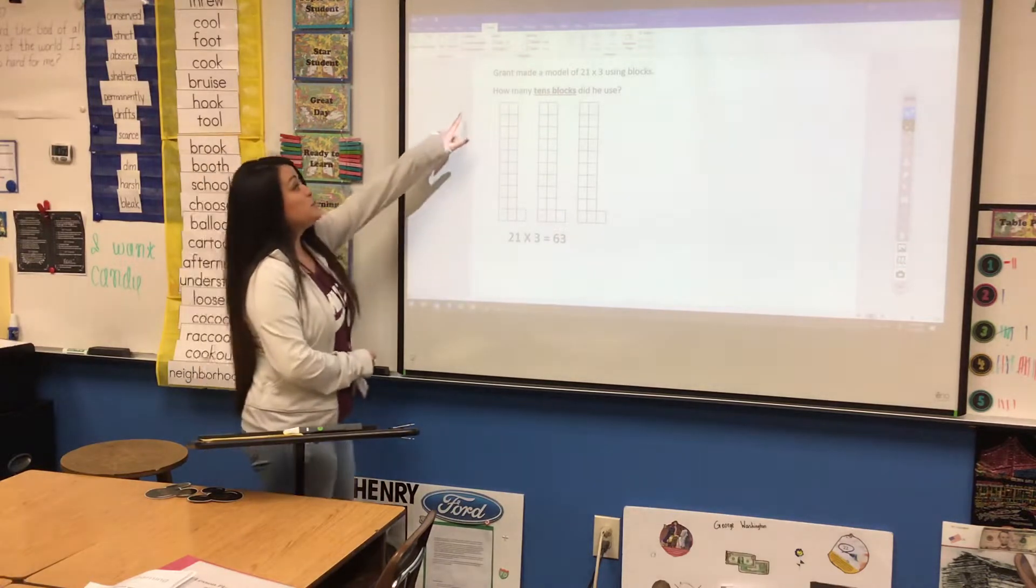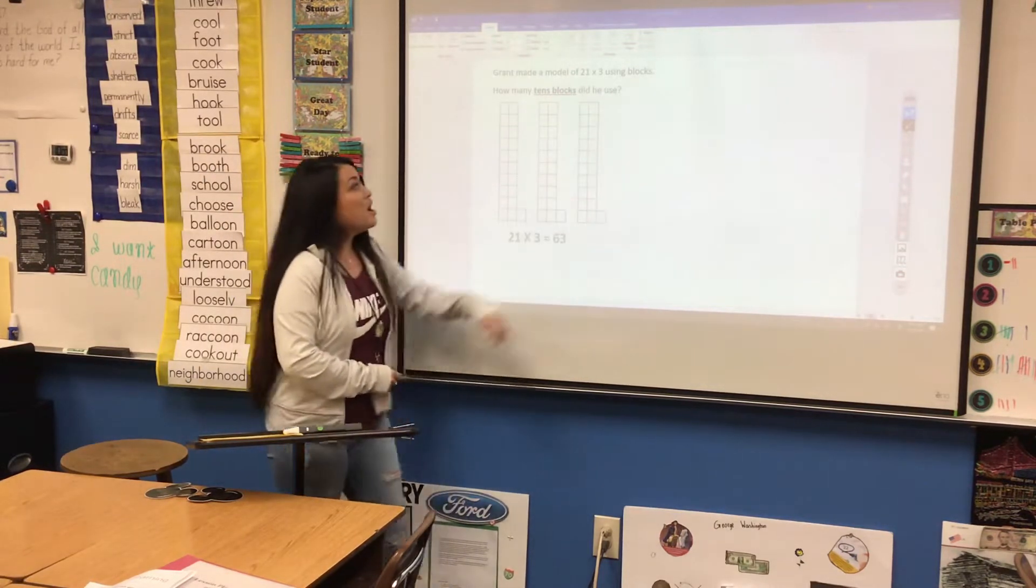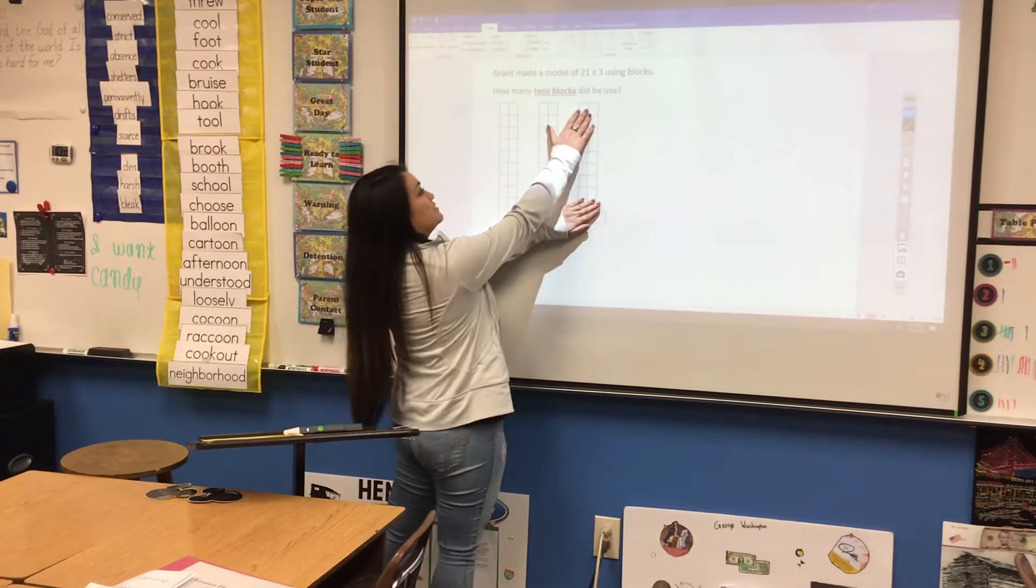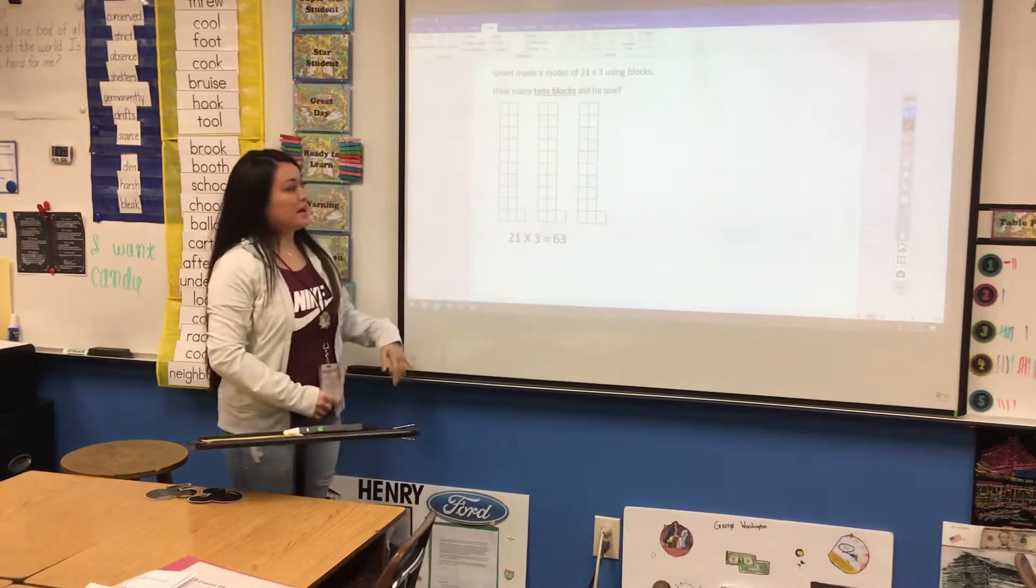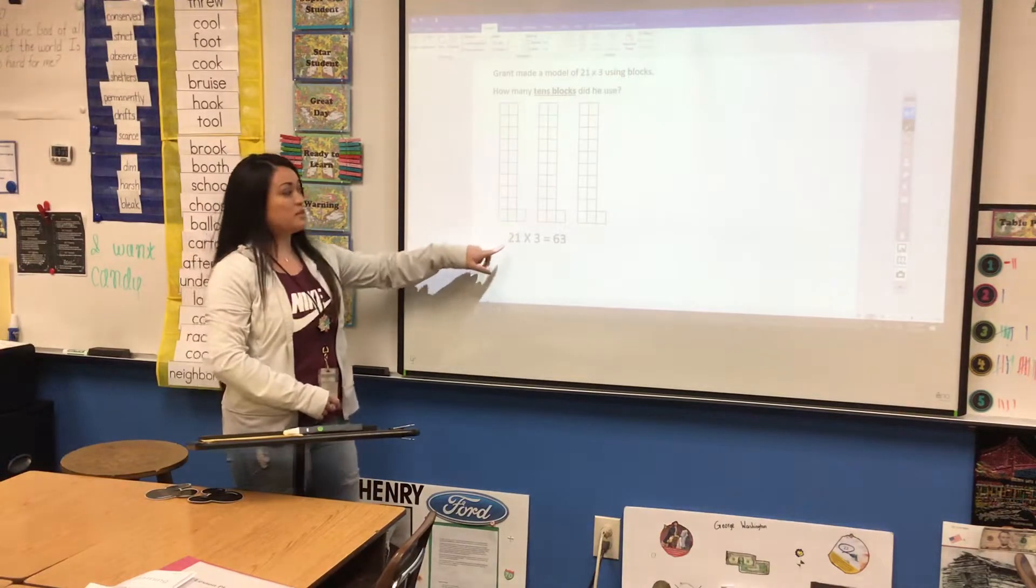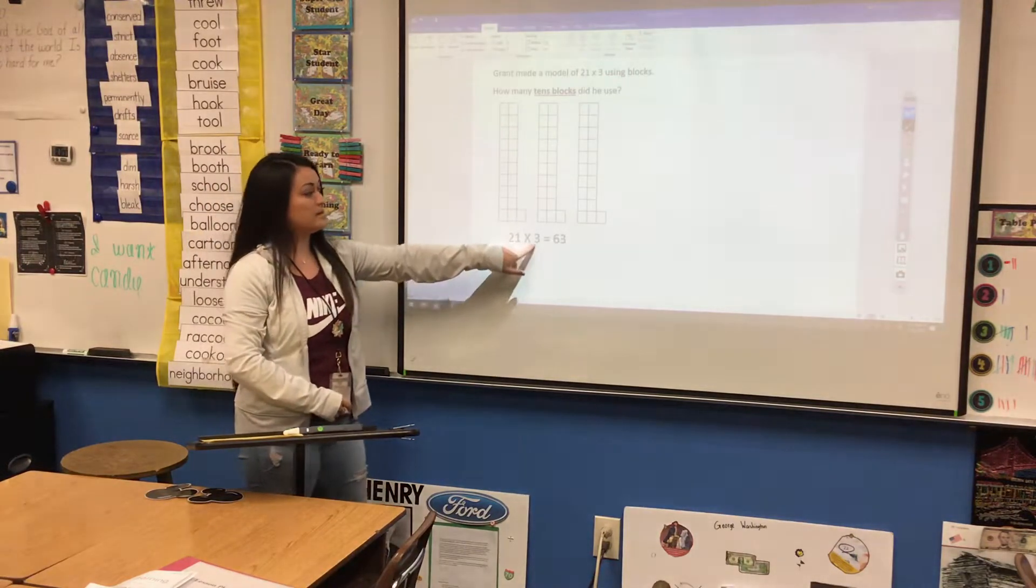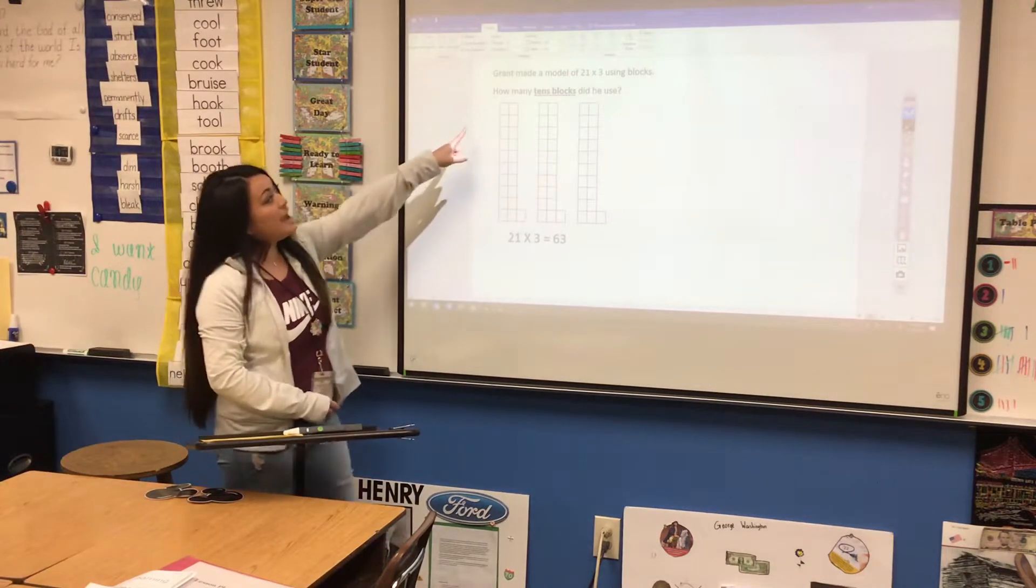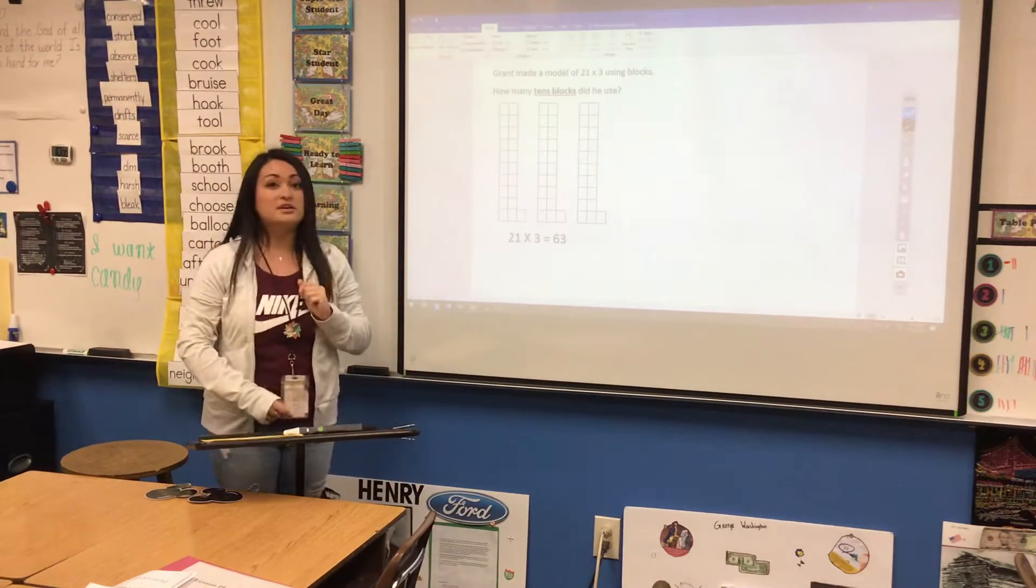So if we're doing 21 times 3, our model for just one is going to look like this. But if we do 3 of them, that's going to represent the multiplication sentence of 21 times 3, which equals 63.